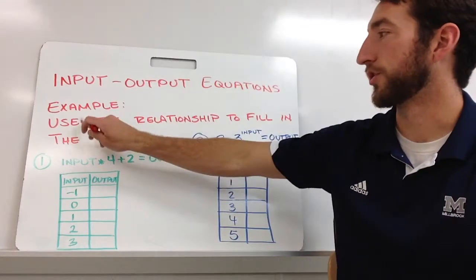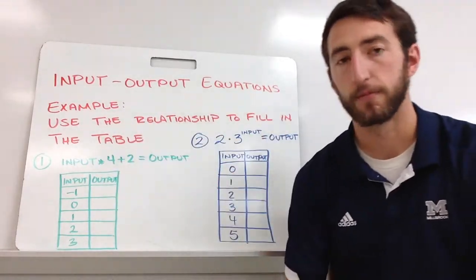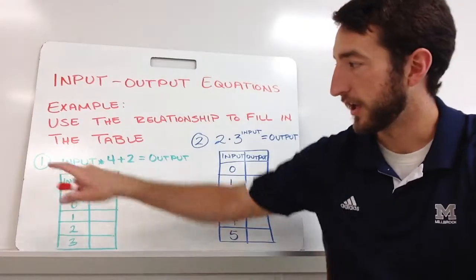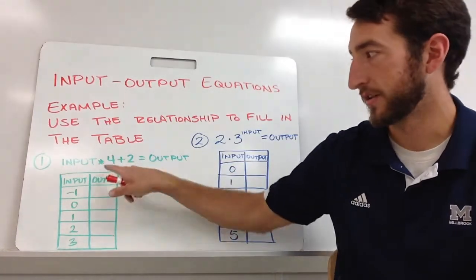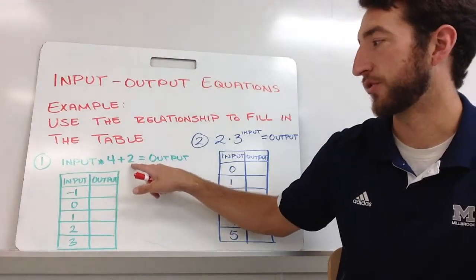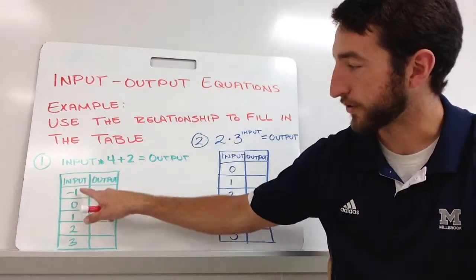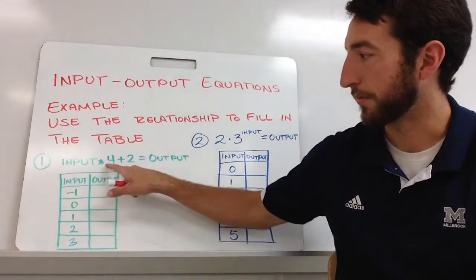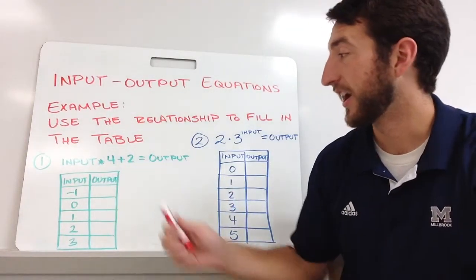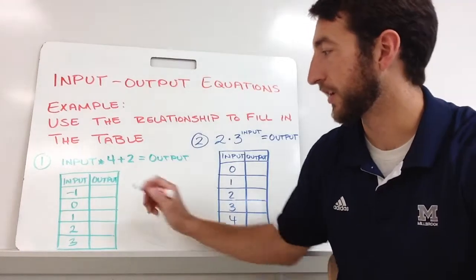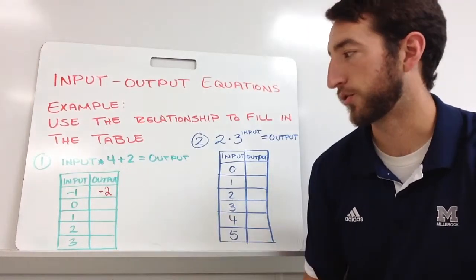We want to use this relationship to fill in the table. In example number one, we take the input, multiply by four, then add two, and that equals our output. So for input negative one: negative one times four is negative four, plus two gives negative two. I put negative two into my table.